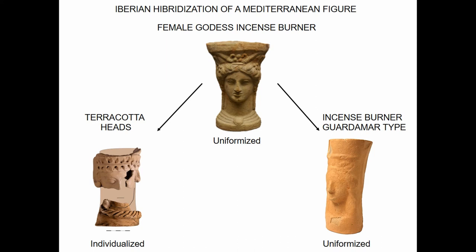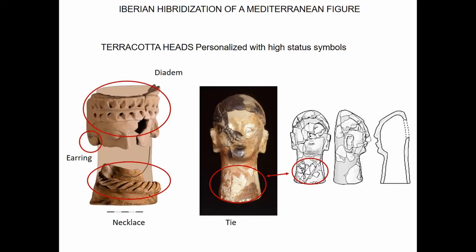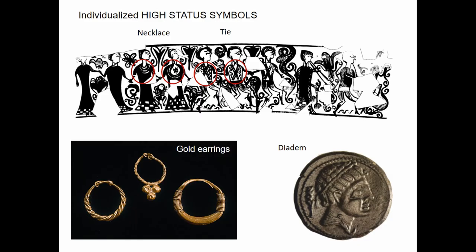On the other side, the terracotta heads we are discussing share the same shape and form as the incense burners but add elements that are important to Iberians. For example, they are personalized with high-status symbols like diadems, earrings, necklaces, and ties that are present in other iconographies — for example, in the paintings of the Etienne base, we can find necklaces for ladies and ties for young boys. We have the same gold earrings found in tombs that are well represented in these terracotta heads, and diadems visible in local coins, like this coin from one of the cities in the area.